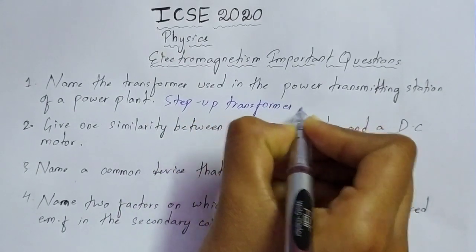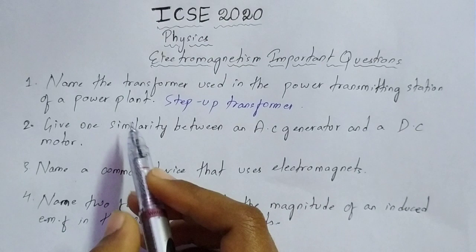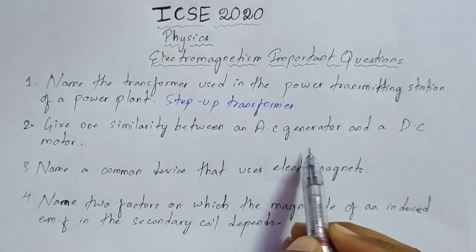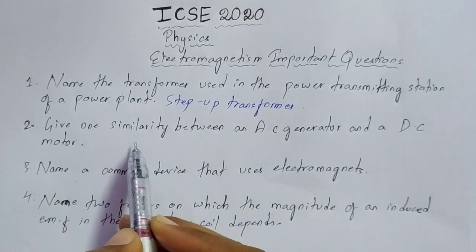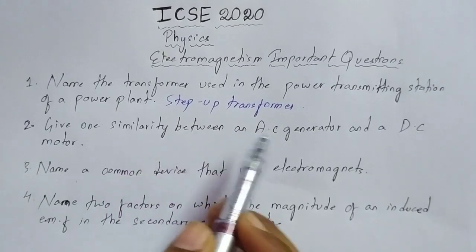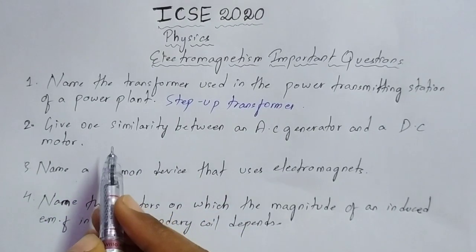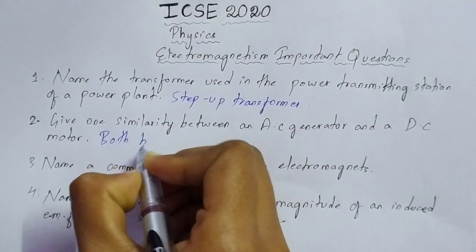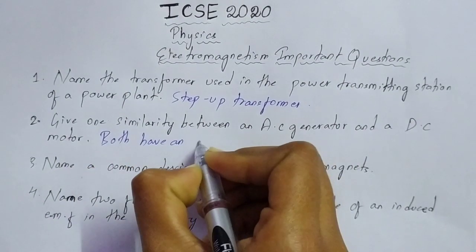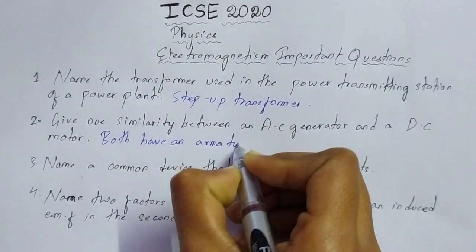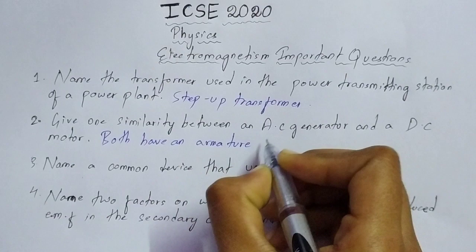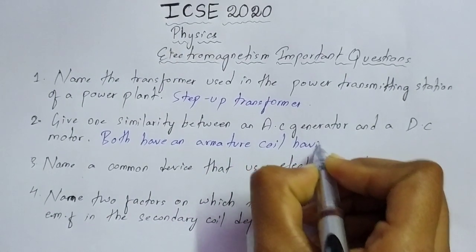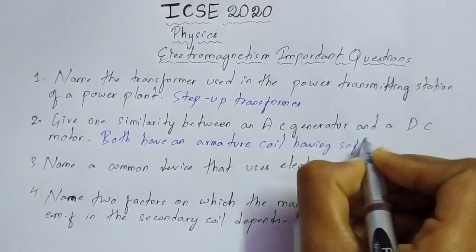Question number two: give one similarity between an AC generator and a DC motor. One similarity is that both have an armature coil having a soft iron core.